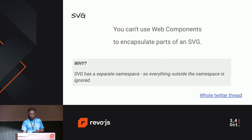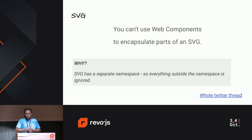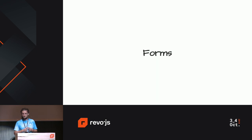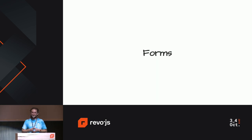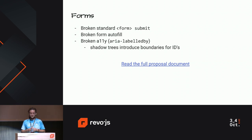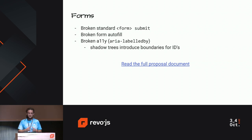Another issue: SVG. You cannot use web components to encapsulate parts of SVG because SVG has a separate namespace, so everything outside is ignored. Check out the linked Twitter thread to learn more. Another issue: forms. There are various issues with forms and web components caused by Shadow DOM — for instance, broken standard form submission. Thankfully, the folks from the standards bodies know about this issue and there is a large proposed document to mitigate it. There are no ETAs but hopefully it'll be fixed soon.